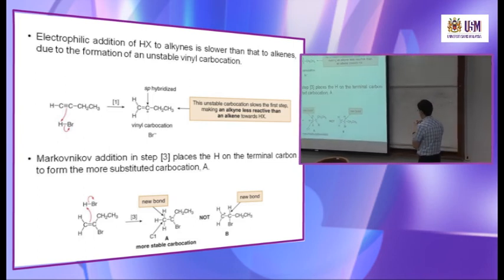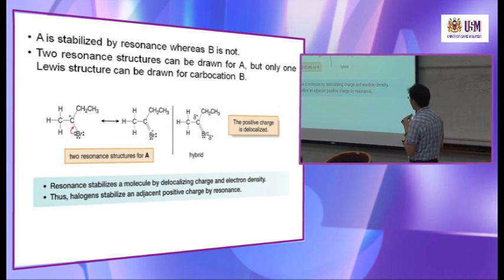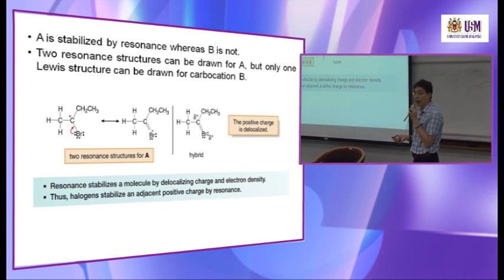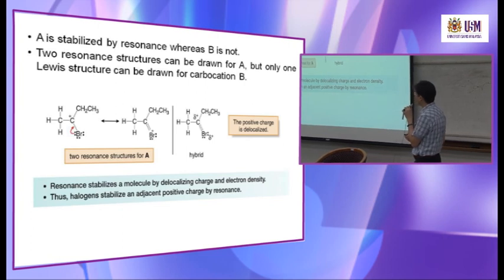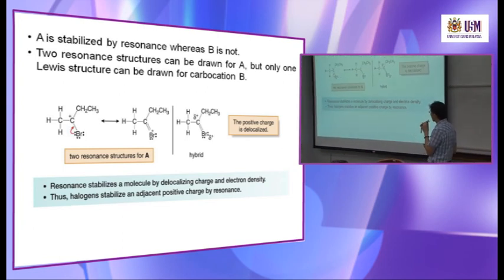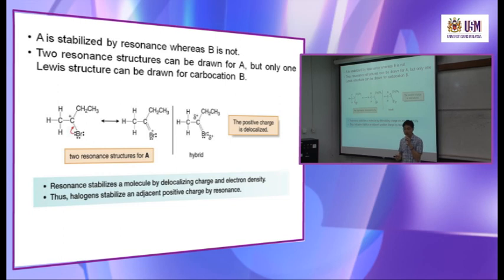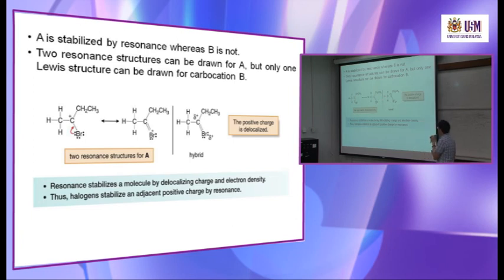This bromine with its lone pair of electrons can donate to form a double bond — shown with double-headed arrows — making a resonance structure. In reality this is a resonance hybrid molecule, where sometimes it's a single bond and sometimes a double bond. If asked in the exam why this intermediate is more stable, give two reasons: (1) the carbocation is more substituted, stabilized by the electron-donating alkyl group; and (2) the bromine lone pair can form a resonance structure delocalizing the charge.